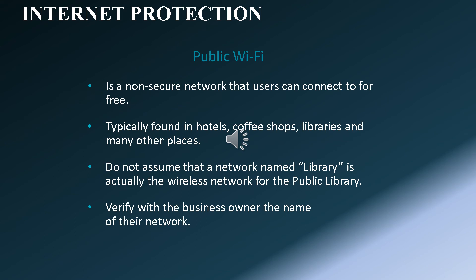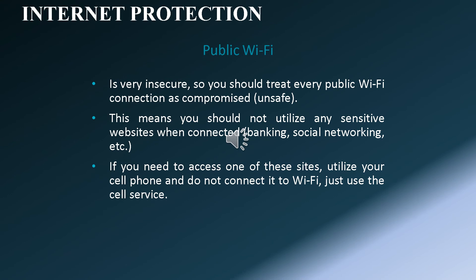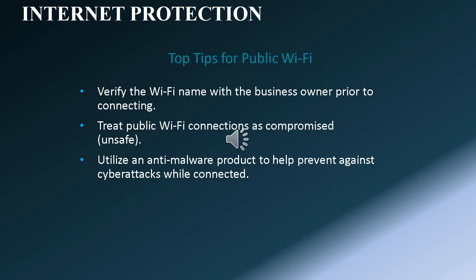What is public Wi-Fi? It is a non-secure network that users can connect to for free, typically found in hotels, coffee shops, libraries, and many other places. Do not assume that a network named 'library' is actually the wireless network for the public library — verify the network name with the business owner. Treat every public Wi-Fi connection as compromised and unsafe. Do not utilize sensitive websites such as banking or social networking when connected. If you need to access one of these sites, use your cell phone without connecting to Wi-Fi — just use cell service. Top tips: verify the Wi-Fi name with the business owner prior to connecting, treat public Wi-Fi as compromised, and utilize an anti-malware product to help prevent cyber attacks while connected.